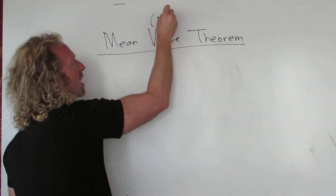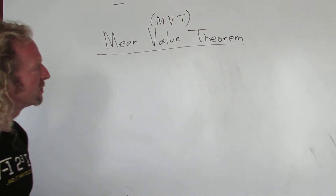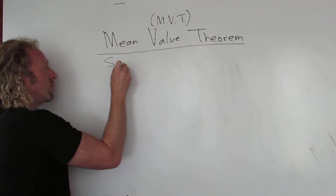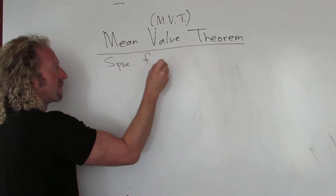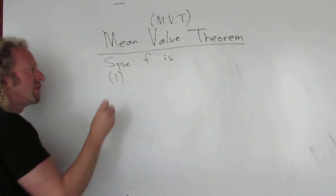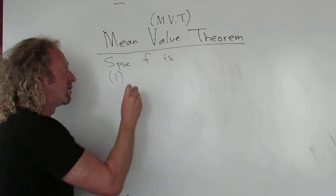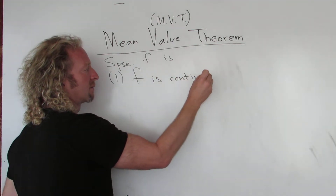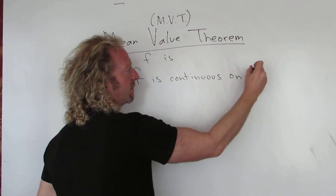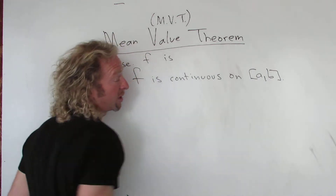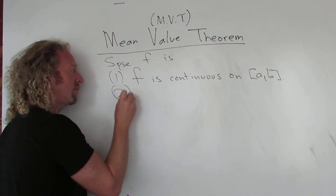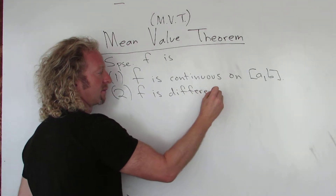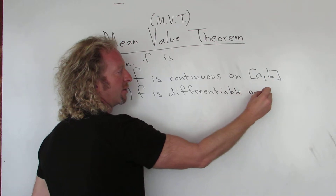We can abbreviate it with three letters: MVT. So what does the mean value theorem say? Here are the conditions. Suppose you have a function F, and there are two conditions. The first condition is that the function is continuous on the closed interval [A, B]. The second condition is that F is differentiable on the open interval (A, B).